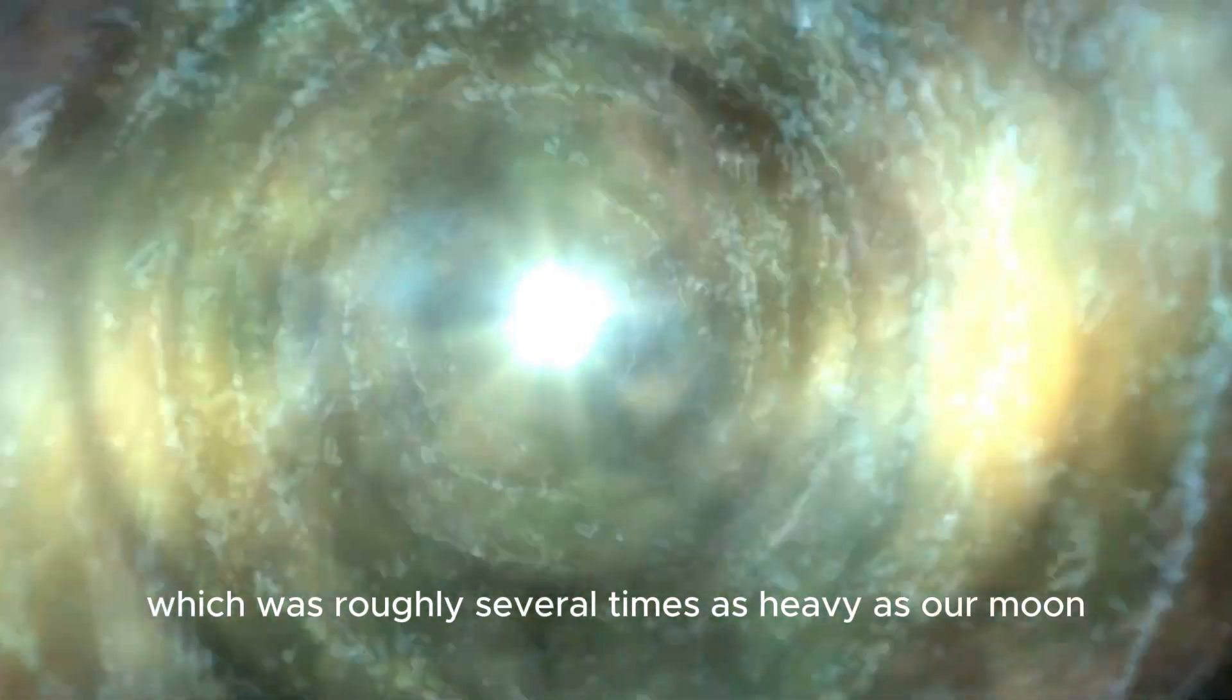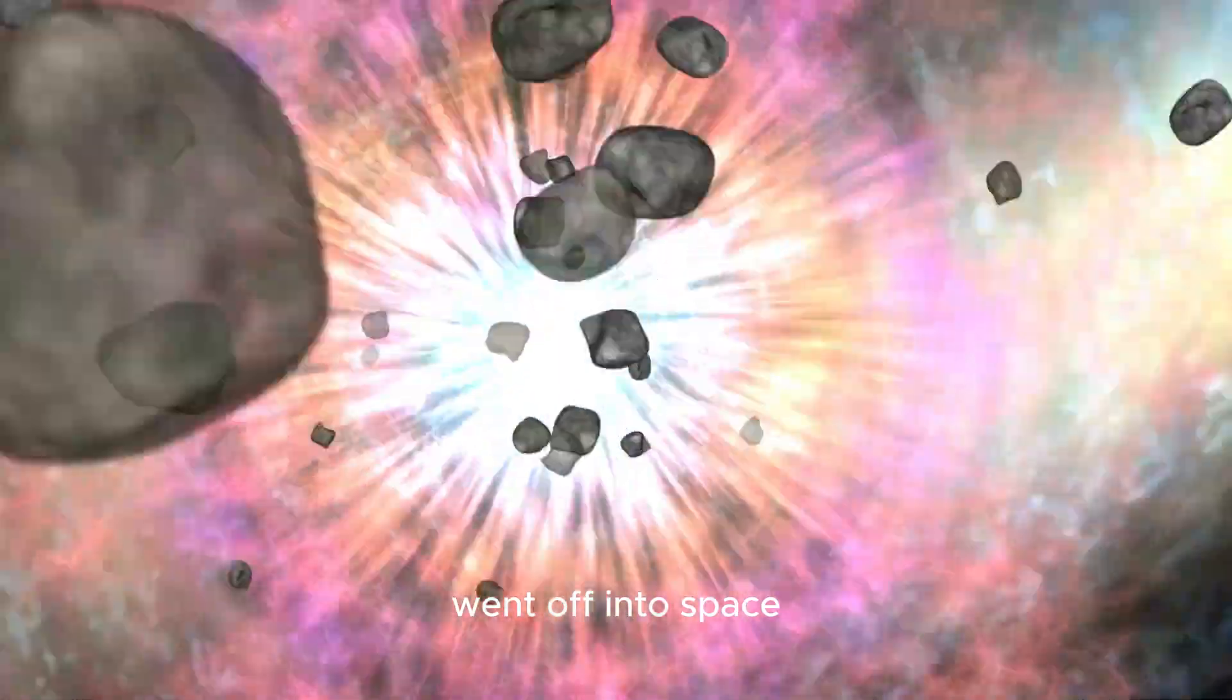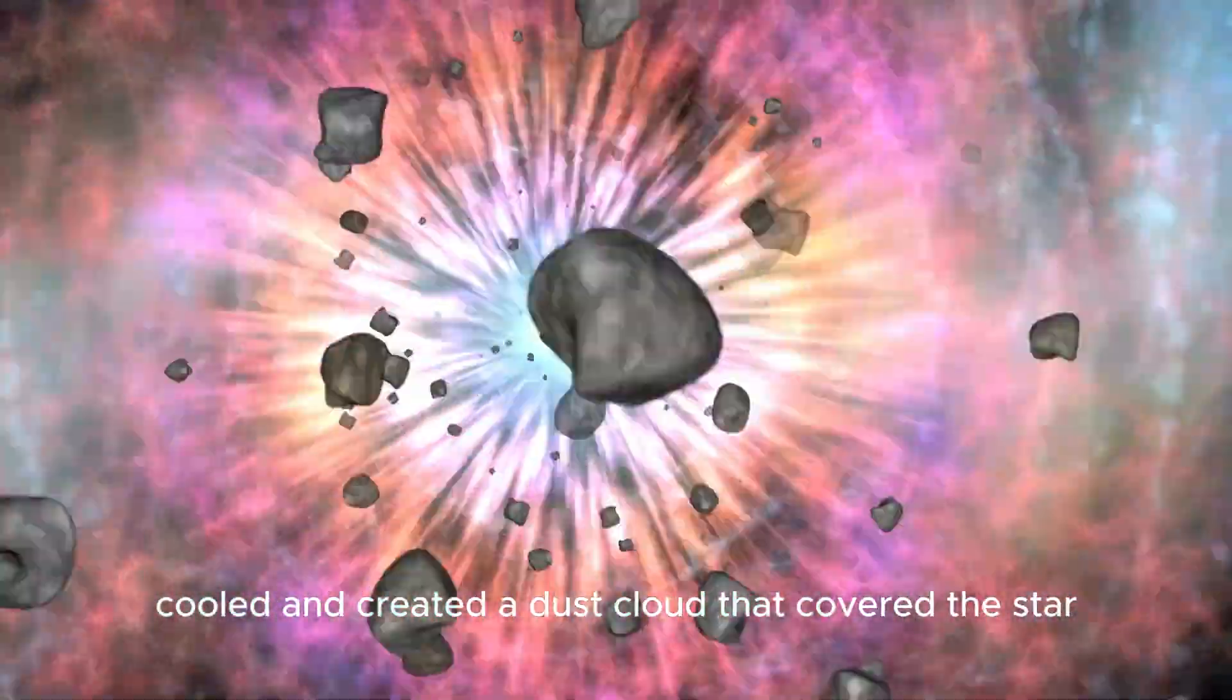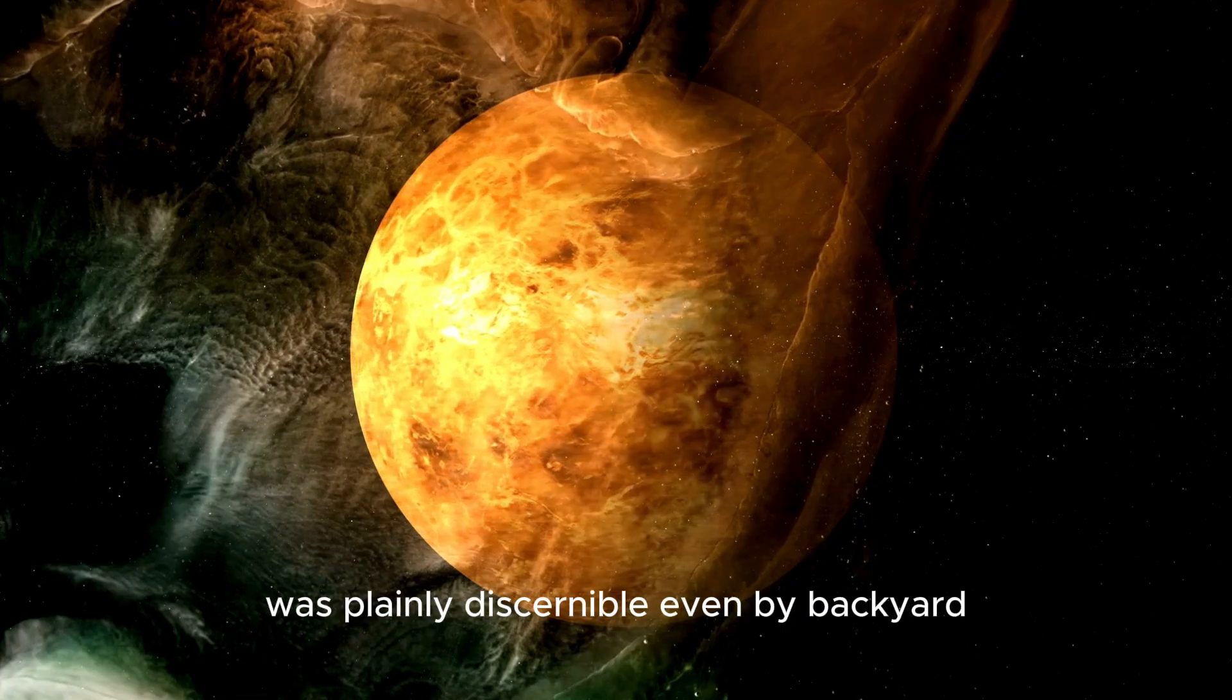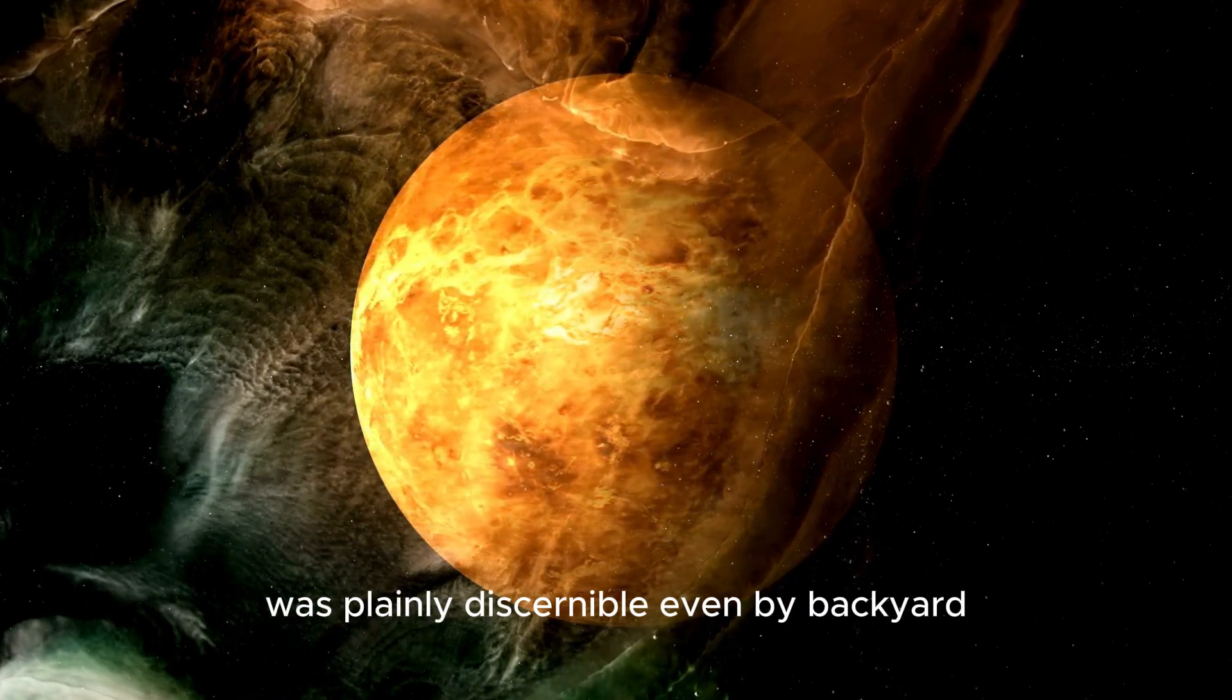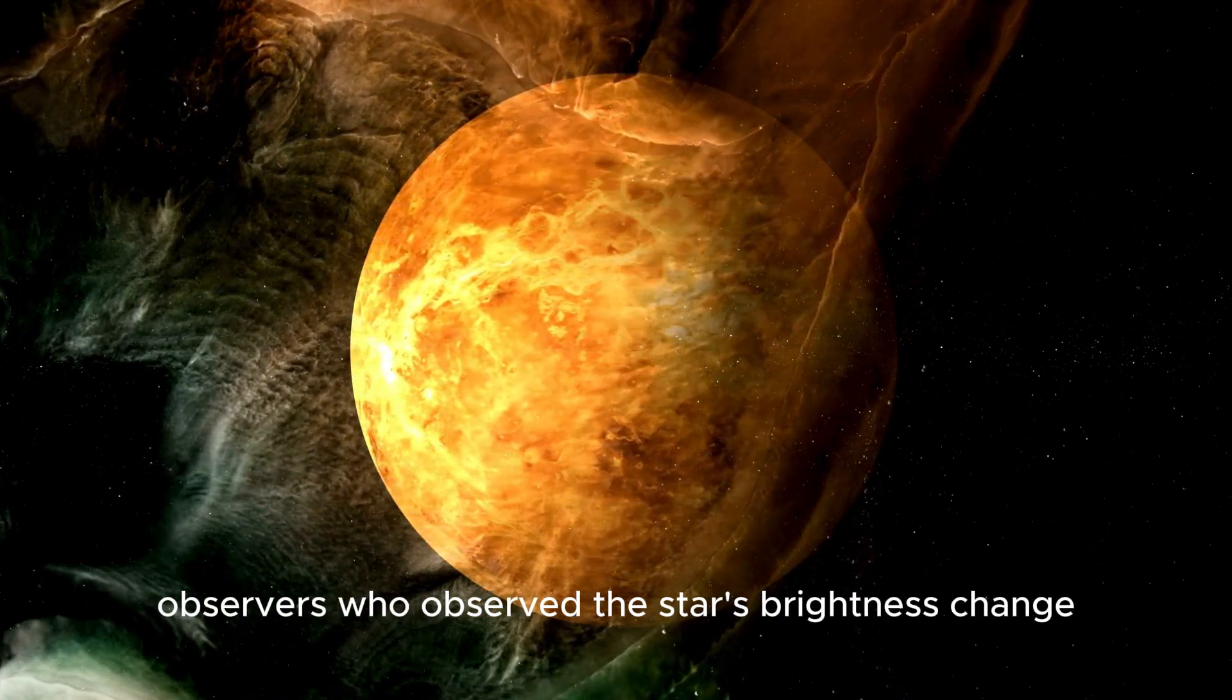The broken photosphere, which was roughly several times as heavy as our moon, went off into space, cooled, and created a dust cloud that covered the star from the perspective of watchers on Earth. The fading, which began in late 2019 and continued for a few months, was plainly discernible even by backyard observers who observed the star's brightness change.